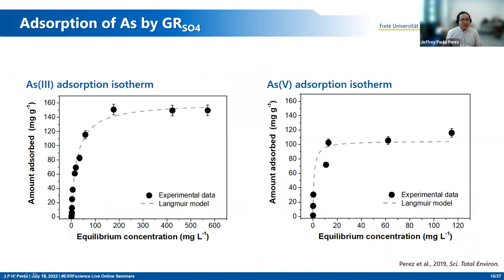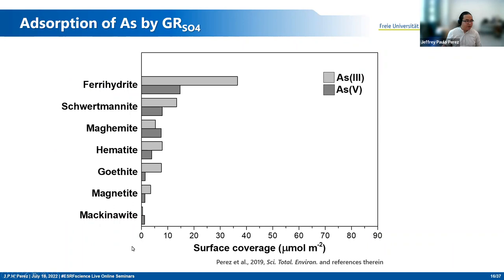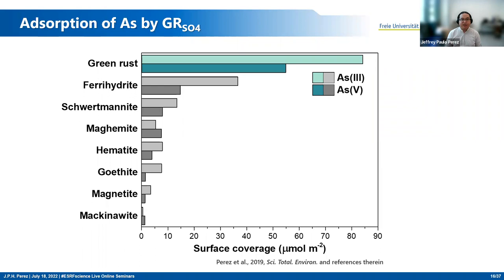Here we have the absorption isotherms for arsenic(III) and arsenic(V) on green rust, showing the amount adsorbed versus the equilibrium concentration remaining in solution. Green rust is able to remove large amounts of both arsenic(III) and arsenic(V) — about 160 mg per gram of green rust for arsenic(III) and about 100 mg per gram for arsenic(V). Comparing to other iron minerals found in the environment using surface coverages normalized to mineral surface area, green rust is among the best performing minerals in terms of sequestering both arsenic(III) and arsenic(V).